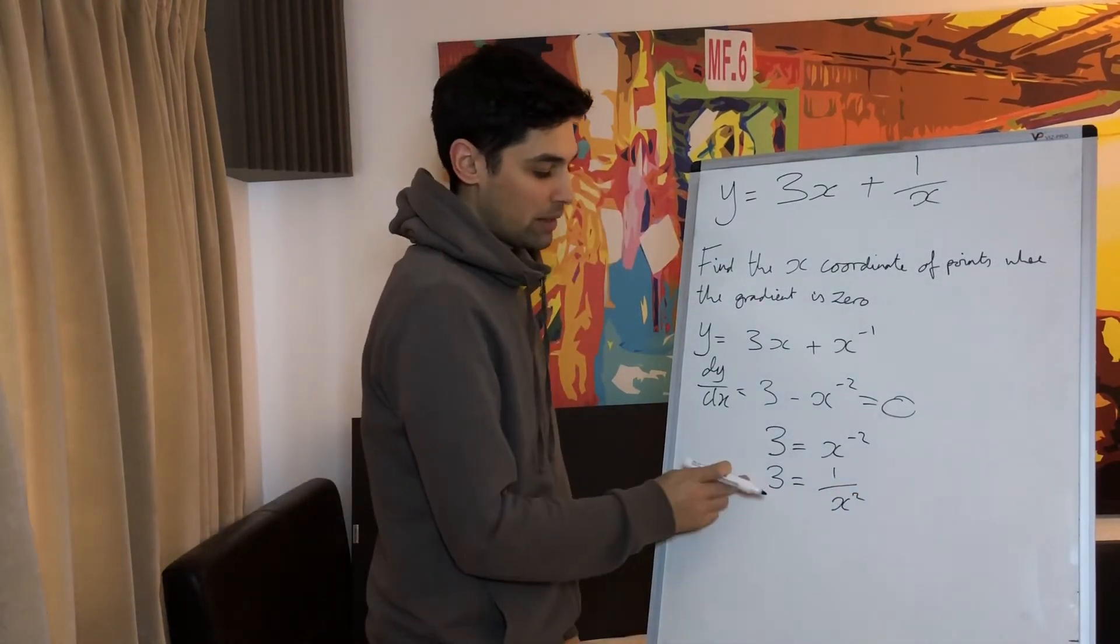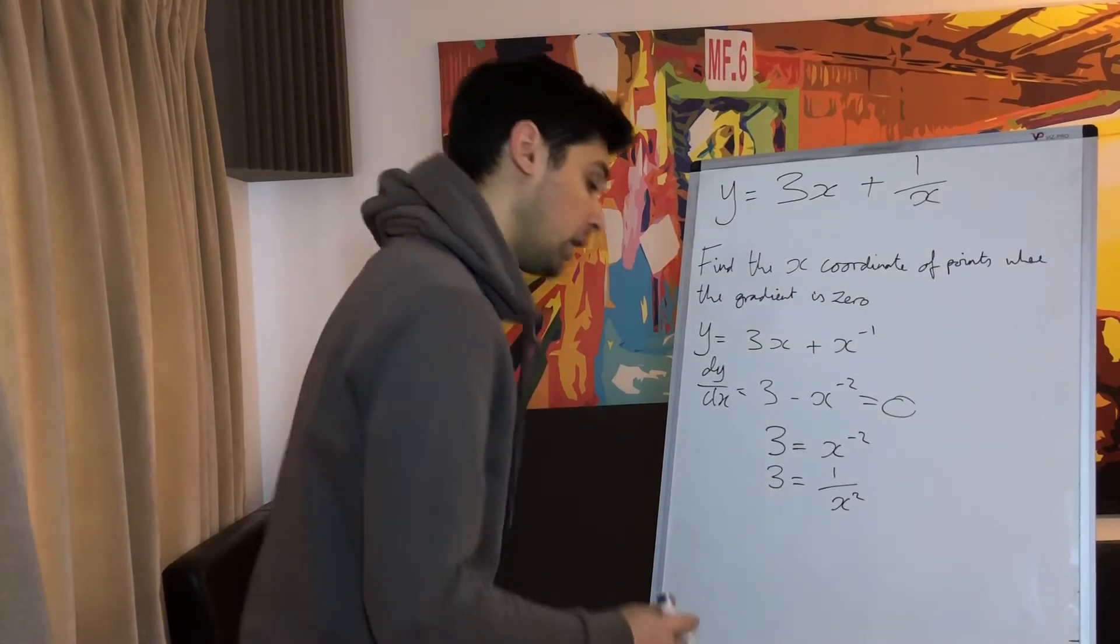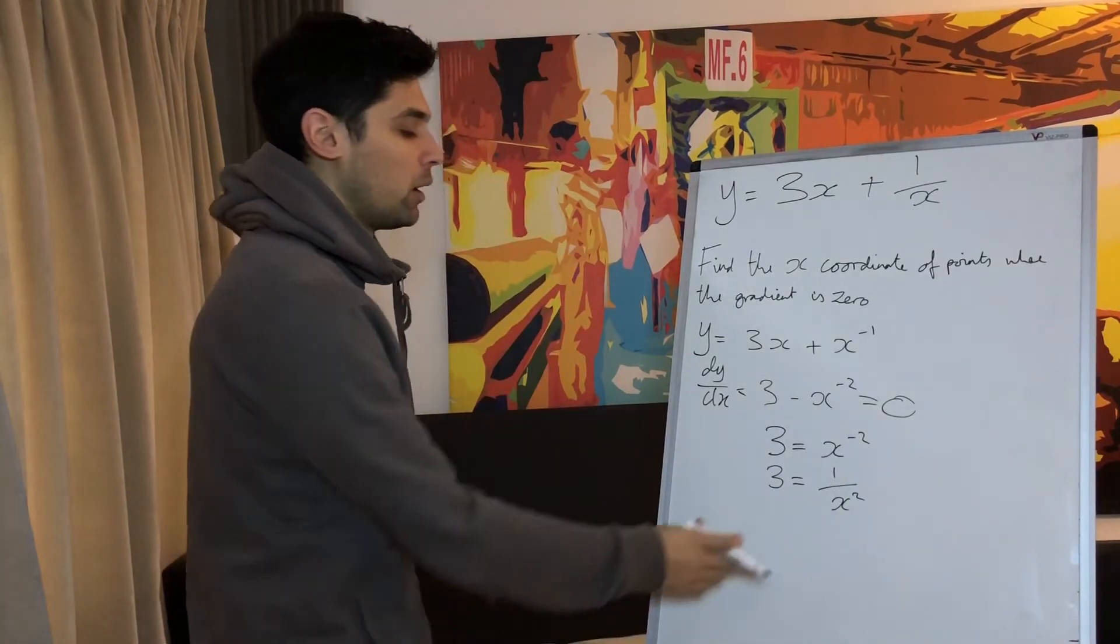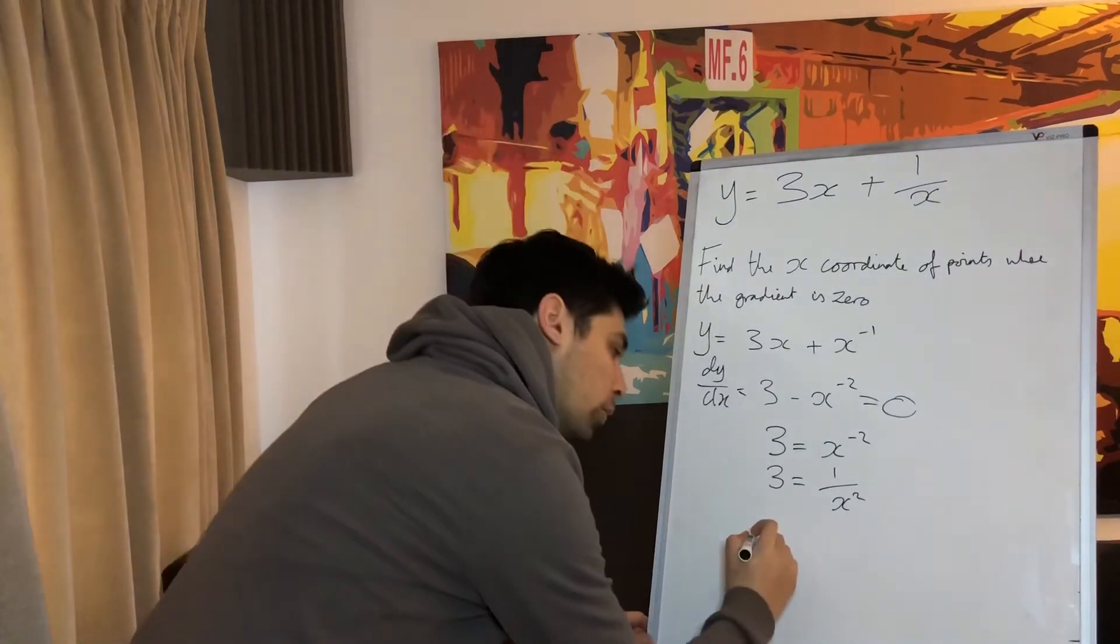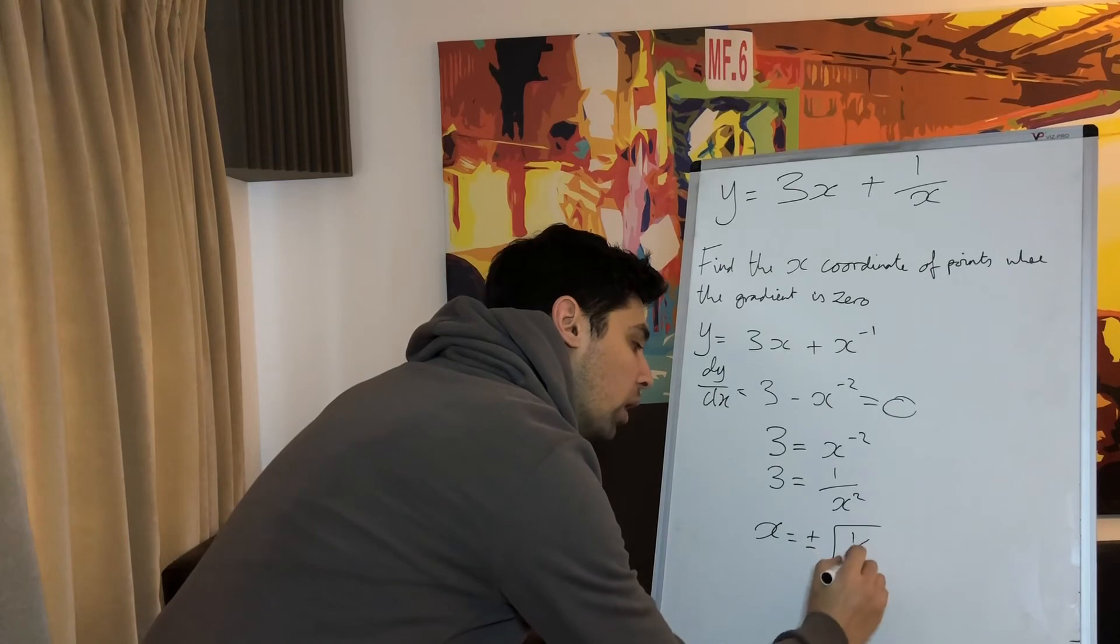Then what we can do is times the x squared up there, divide the 3 down there. We've got x squared equals a third. Then we can square root both sides. I'm skipping a couple of steps here because I'm almost running out of space. But once we get x squared equals a third, we can then square root it and it will be x equals plus or minus the square root of a third.